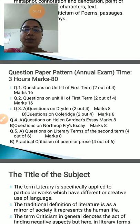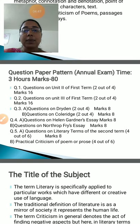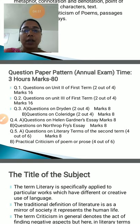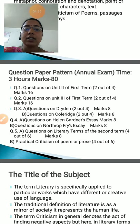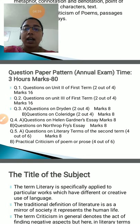Question number one would be on unit two of the first term's syllabus, meaning the first term syllabus is included here. There would be four questions and out of four you will have to attempt two. The marks are 16, meaning you will have to write one answer for eight marks.